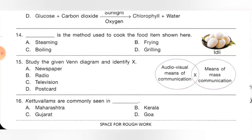Fifteenth one: study the given Venn diagram and identify X. Option A: newspaper, B: radio, C: television, D: postcard. X is both an audio-visual means of communication as well as a mass communication medium. Television is audio-visual and also a mass communication medium. Option C is the correct answer.